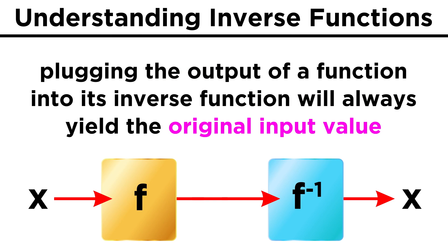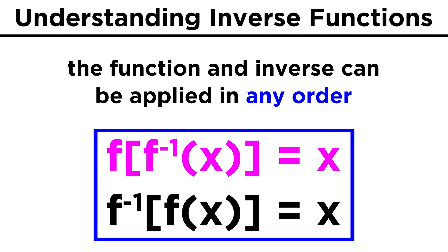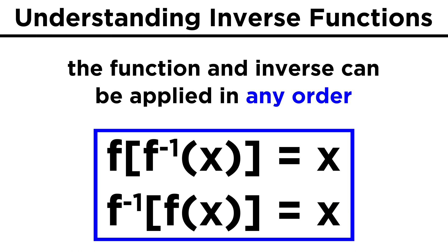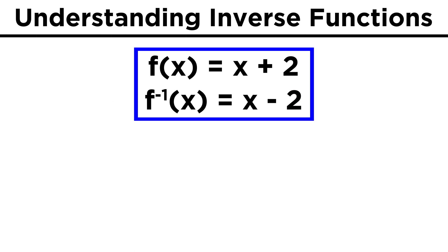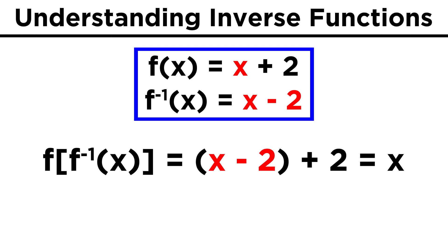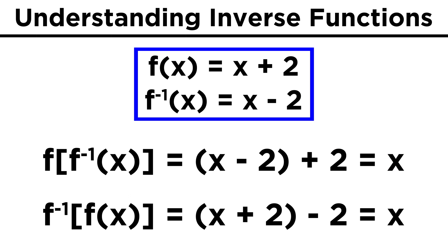If an inverse function exists, we can demonstrate this for any x input, applying f and then f inverse to get the original value. It should also be the case that f of f inverse of x equals x, and also that f inverse of f of x equals x, which is a good way to check your math. Let's show this for the previous example. f(x) is x plus two. If we plug f inverse in there, or x minus two, we get x minus two plus two. This is equal to x. The same goes for the reverse operation.